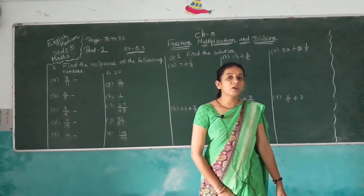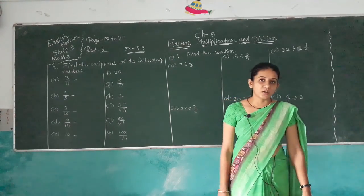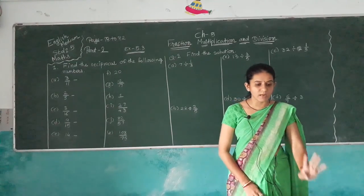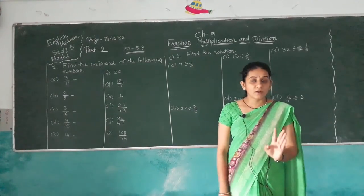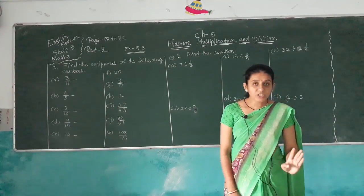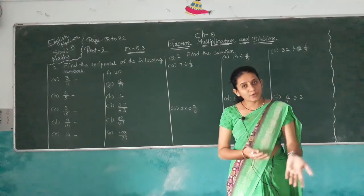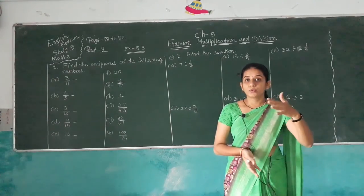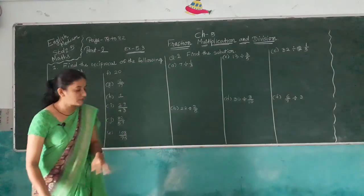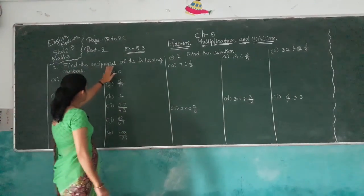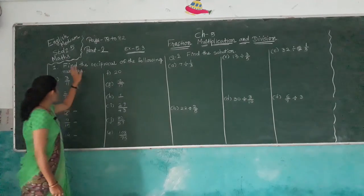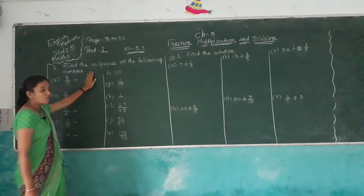First, the reciprocal of a fraction. What is the reciprocal of a fraction? Reciprocal of a fraction means inverting the given fraction — changing the numerator to the denominator and the denominator to the numerator. Now, find the reciprocal of the following numbers.